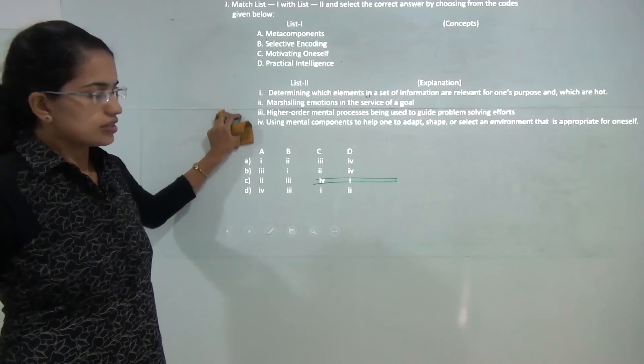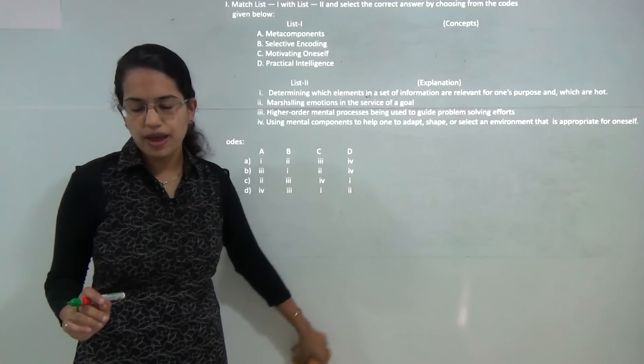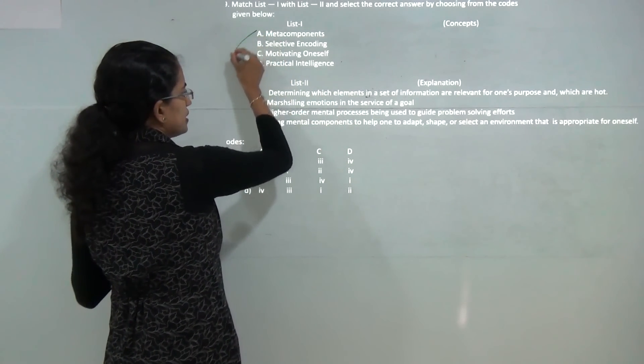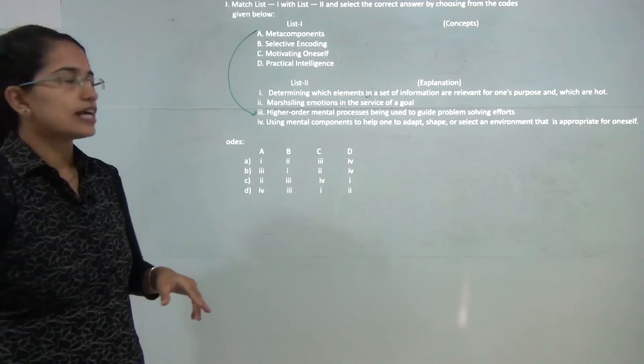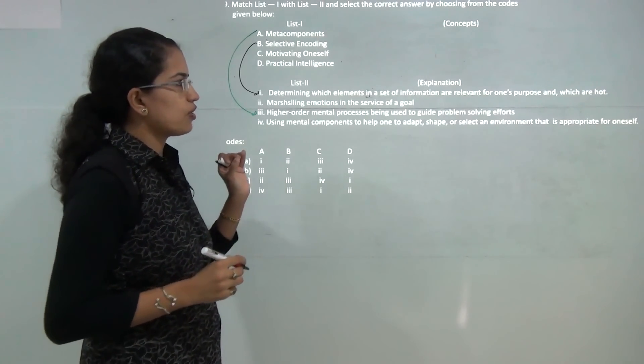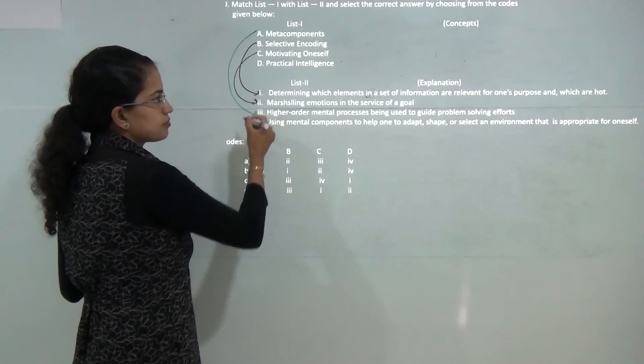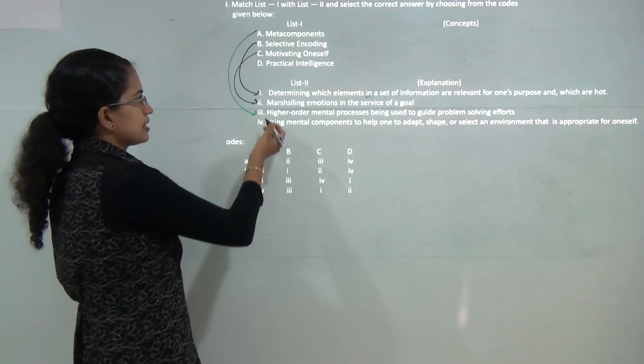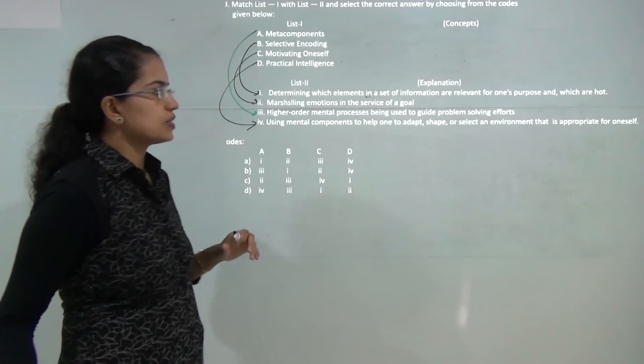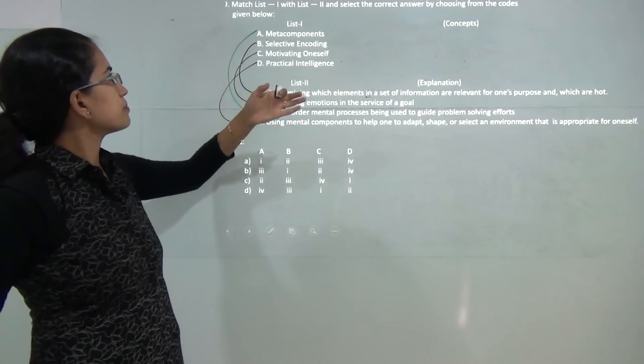Next question: you have the match list which has been given to the components here. So what you have to do is match the list with the components. Metacomponents are higher order mental processes that guide the problem solving efforts. Then selective encoding talks about the set of information which is relevant for one's purpose. Motivating oneself implies marshalling the emotion in the service of the goal. And finally, practical intelligence by definition implies using mental components to help one to adopt, shape, and select an environment that is appropriate or good for oneself. So that is how we define practical intelligence.